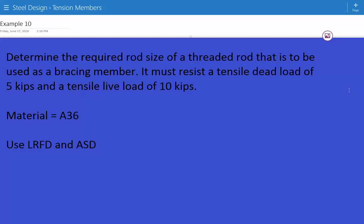The problem statement is to determine the required rod size of a threaded rod that is to be used as a bracing member. It must resist a tensile dead load of 5 kips and a tensile live load of 10 kips. The material is A36 steel, and we need to use LRFD and ASD.